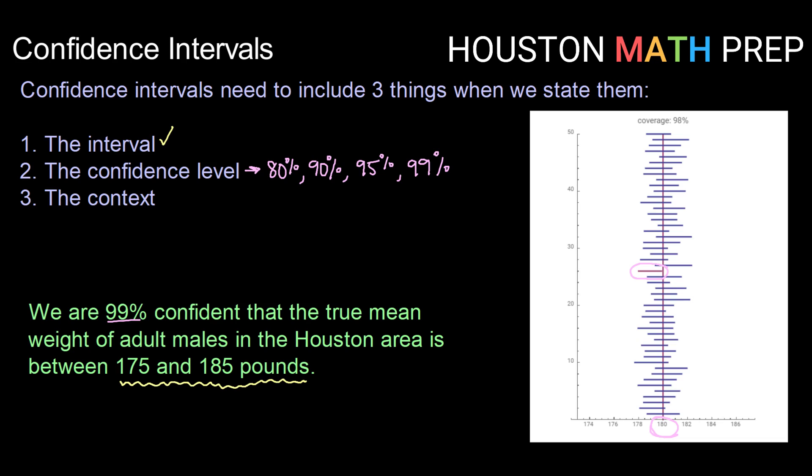And the final thing that needs to be in every confidence interval is the context. So you need to not just say we're 99% confident in the interval 175 to 185. You need to give context. So we need to say that we're 99% confident that the true mean weight of adult males in the Houston area is between 175 and 185. So there's our context.